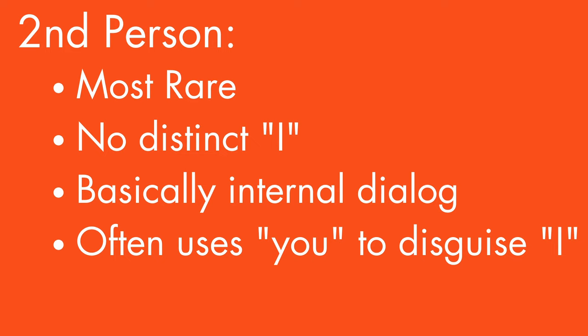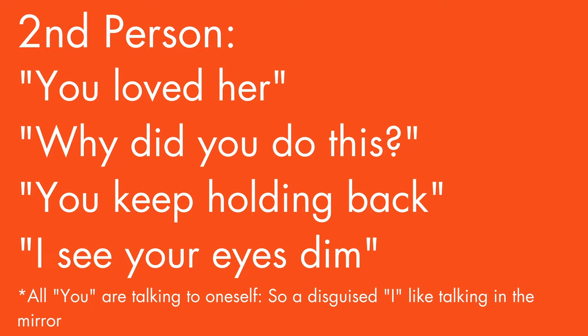Second person is probably the most rare. There's no distinct 'I' in second person. It usually involves the narrator talking to themselves — sort of the man-looking-in-the-mirror type concept — where talking to yourself would be the main way that second person is used.